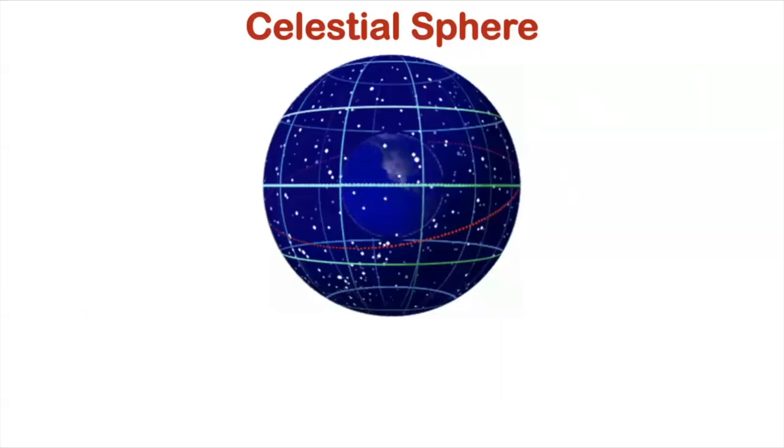Okay, so we have this thing called celestial sphere. When we look up at the night sky, we see stars and planets that seem to be attached to an imaginary spherical surface. So this imaginary sphere is known as the celestial sphere, with the Earth being located at its center.